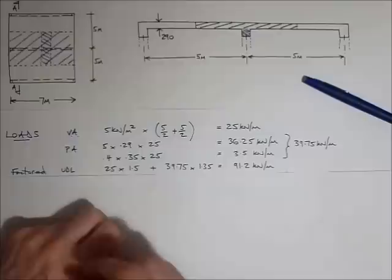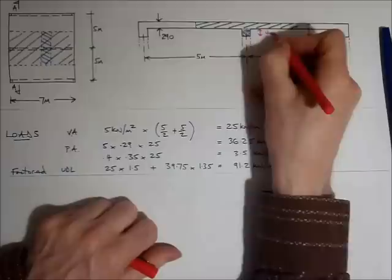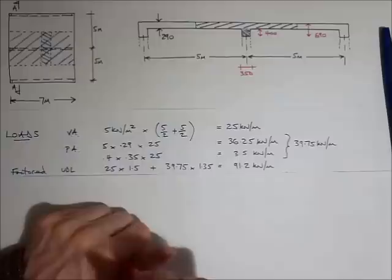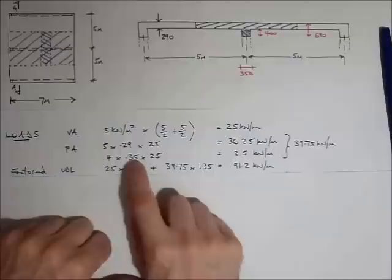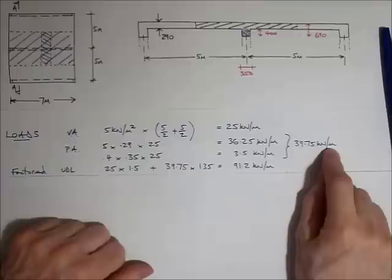The beam itself we know is 690mm deep, because we calculated that. We were given that right at the start. Therefore the downstand section of the beam is 400mm deep, and we know before that the beam is 350mm wide. So the self-weight of that small portion of the downstand part of the beam is 0.4 by 0.35 by 25kN/m³, gives us 3.5kN/m run. Add the two lots of dead load together, and it gives us a total of 39.75kN/m.